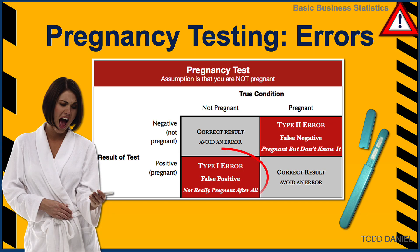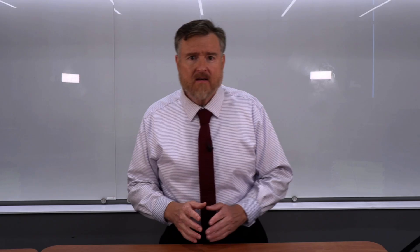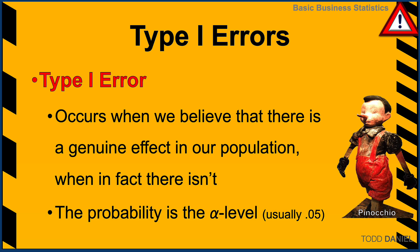A type 1 error is a false positive. It's saying that you are pregnant when in fact you are not, and that feels a little bit like lying — saying that something is true when in fact it is not. A type 2 error occurs when the test is a false negative: you are pregnant, but you don't know it yet. Both type 1 and type 2 errors come with their own set of consequences. A type 1 error occurs when we believe that there is a genuine effect in our population when in fact there is not. The probability of making a type 1 error is the alpha level, which is typically 0.05.